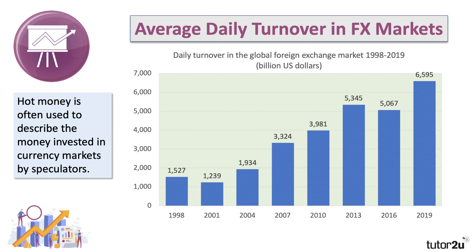Part of it is linked to the huge daily turnover in foreign exchange markets, as investors look to put their hot money in a currency whose value they think will go up and where the rate of interest on short-term savings deposits is best. The average daily turnover in the global foreign exchange markets has been climbing — it's over $6.5 trillion per day in 2019, and that figure has presumably gone up since. Hot money is often used to describe the money invested in currency markets, often dominated by speculators.